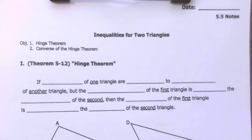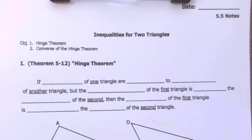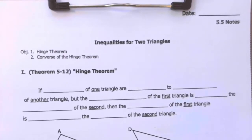Good afternoon! We are going to do the notes for 5.5, inequalities for two triangles. So the first theorem that we're going to learn is called the hinge theorem. It's a pretty easy concept, if I can use my poor illustrations and show you.